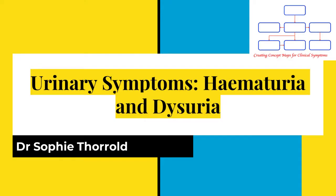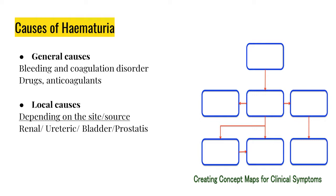Hi, my name is Dr. Sophie Thorold and I will be presenting this concept map on haematuria and dysuria. The causes of haematuria can be broken down into two main categories: the first being general causes, which cause bleeding in any part of the body, and then we have the local causes, which just cause bleeding in the urinary system and causing the haematuria.